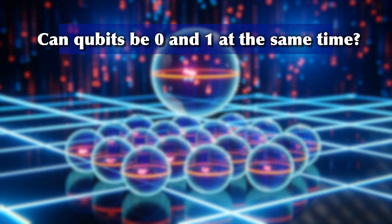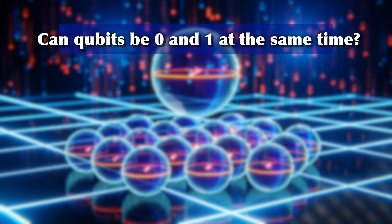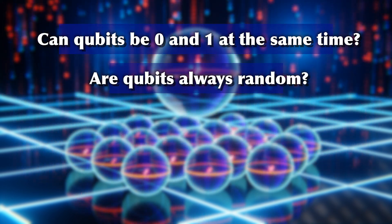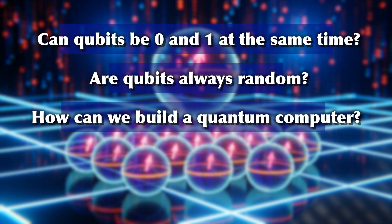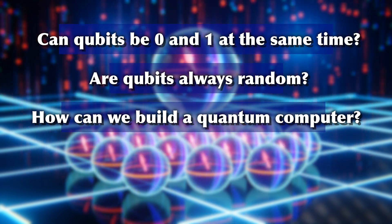Instead, I decided to challenge the viewers a bit. But this would also allow me to go to a much deeper explanation. That way, we can talk in a much more meaningful way about questions like: Is it true that qubits can be zero and one at the same time? Are they always random? And if so, how can we build a useful computer around that?